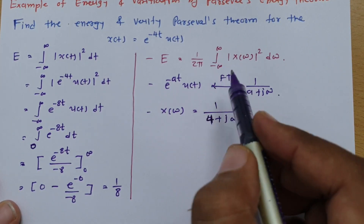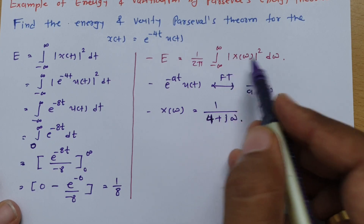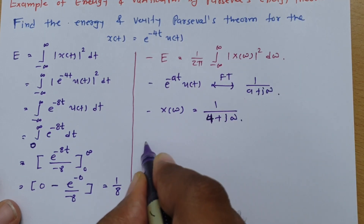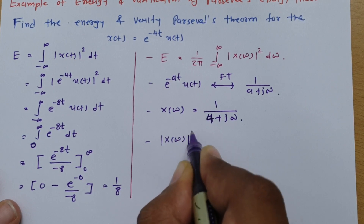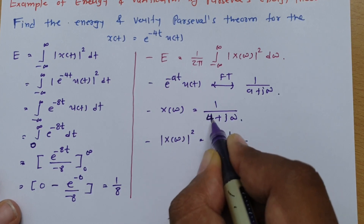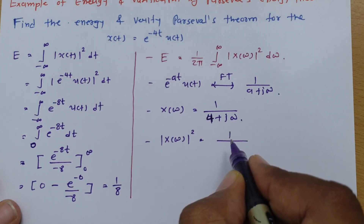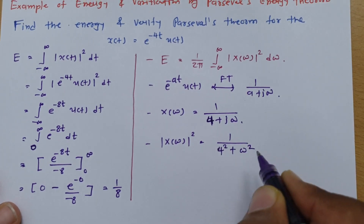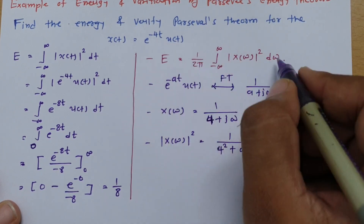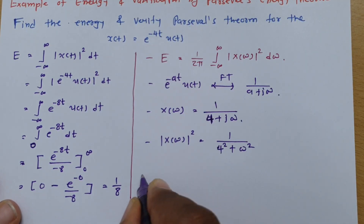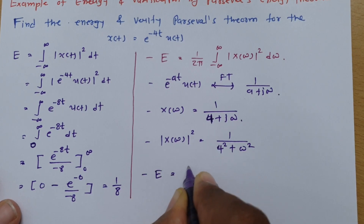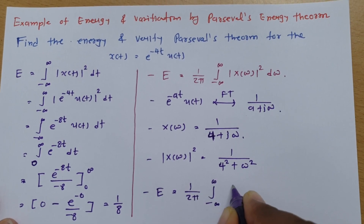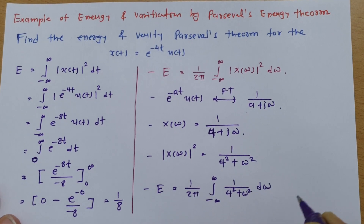In the Parseval's formula, |X(ω)|² is required. Taking the magnitude squared: |1 / (a + jb)|² = 1 / (a² + b²). So |X(ω)|² = 1 / (4² + ω²) = 1 / (16 + ω²). Placing this into Parseval's formula, the energy becomes (1/2π) × integration from minus infinite to infinite of 1 / (16 + ω²) dω.